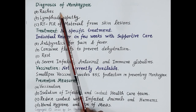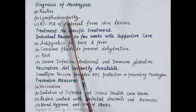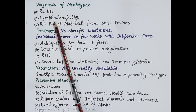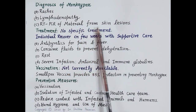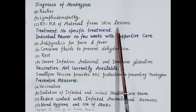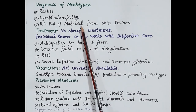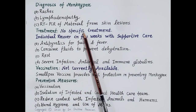Let's understand diagnosis of monkeypox — how the disease is identified. First is the appearance of rashes. Second, lymphadenopathy is a distinctive feature of monkeypox not found in chickenpox or smallpox. The RT-PCR test is very useful; the test is done on the material found in the skin lesion or in the rashes. This is how monkeypox is identified or diagnosed.